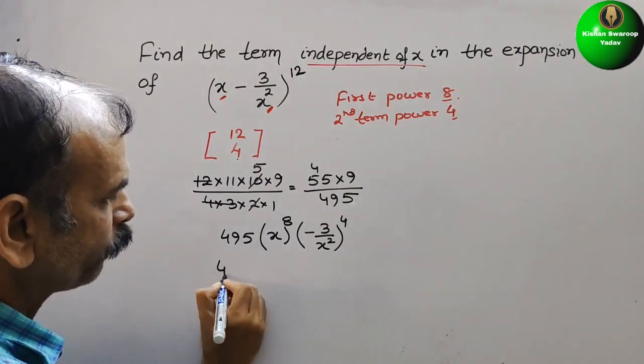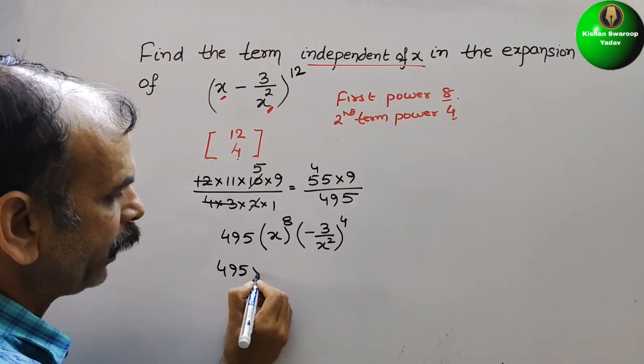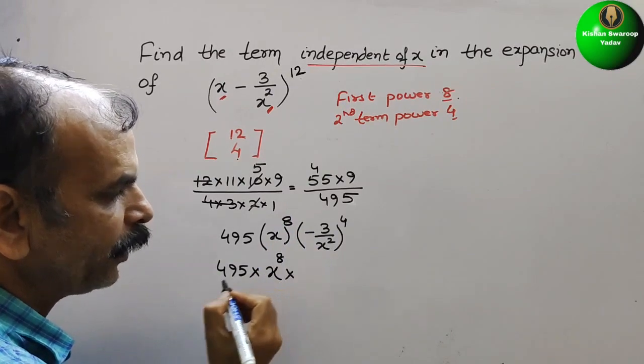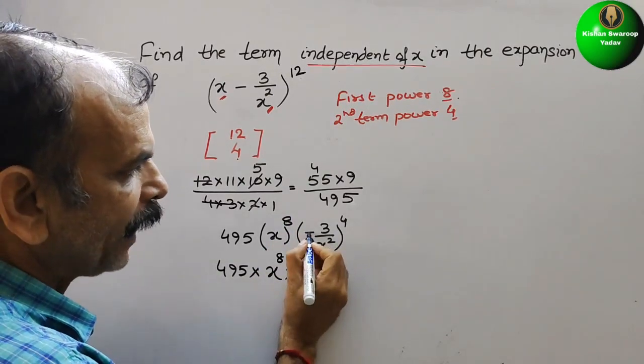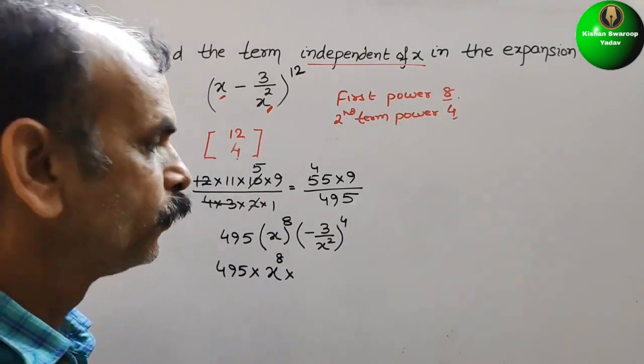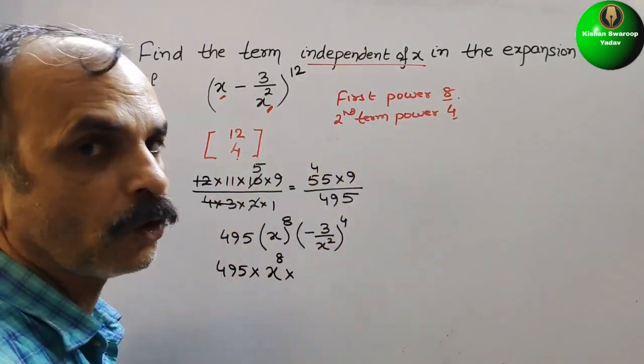Now solve this. So here you will get 495 into x to the power of 8 into here minus power is even. We will get plus only.